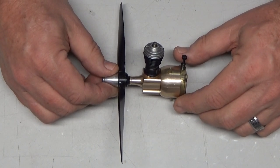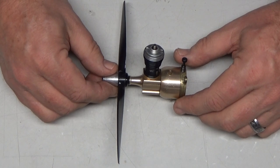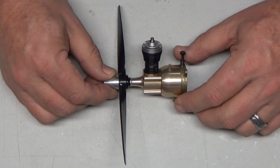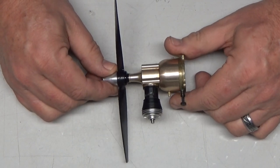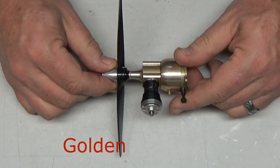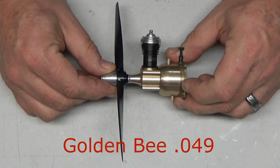I recently was successful in getting the Black Widow to run, but even prior to that I had been searching on eBay and got really lucky in that I found this beautiful little Cox Golden Bee engine.